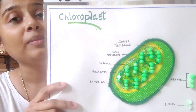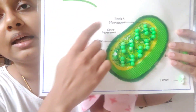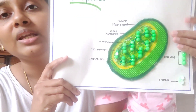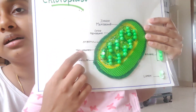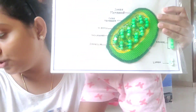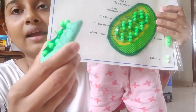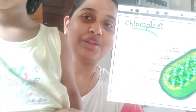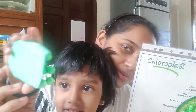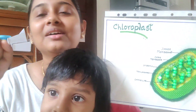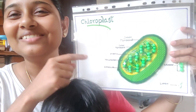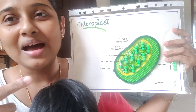Hi all. This chloroplast study we have been doing for the past two weeks. Totally there are like seven terms that I have introduced to her. Initially it was only three — the stroma, the lamellae, and the thylakoids — which I introduced through this 3D model.